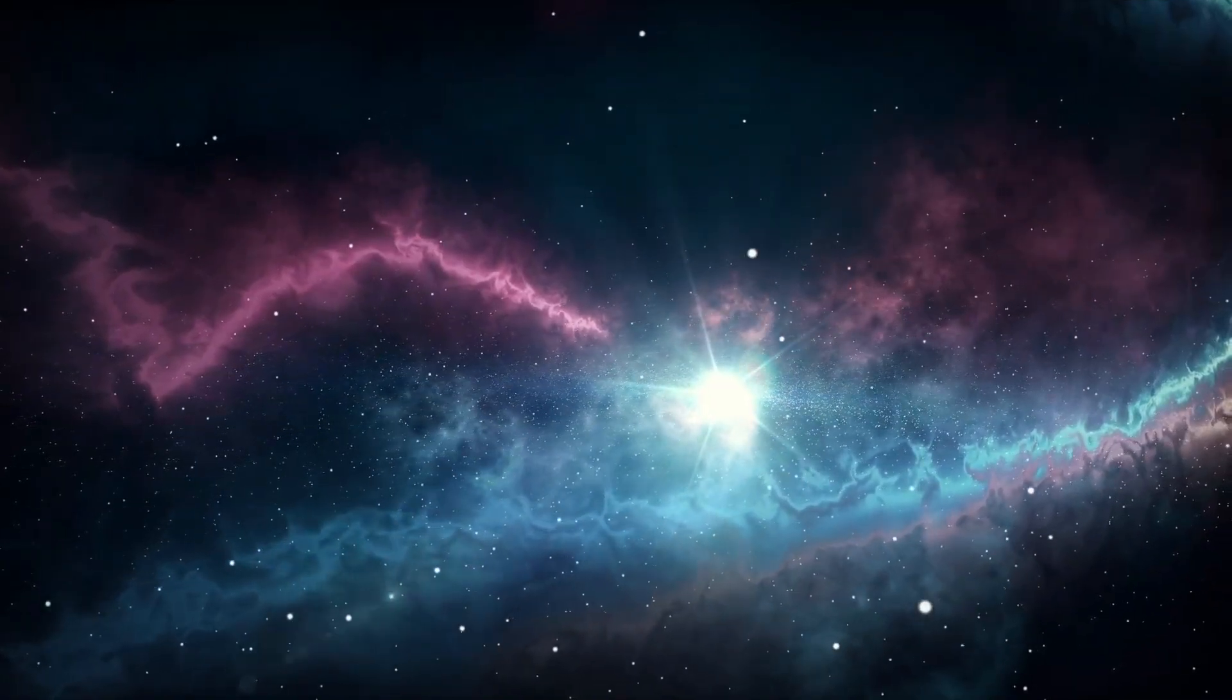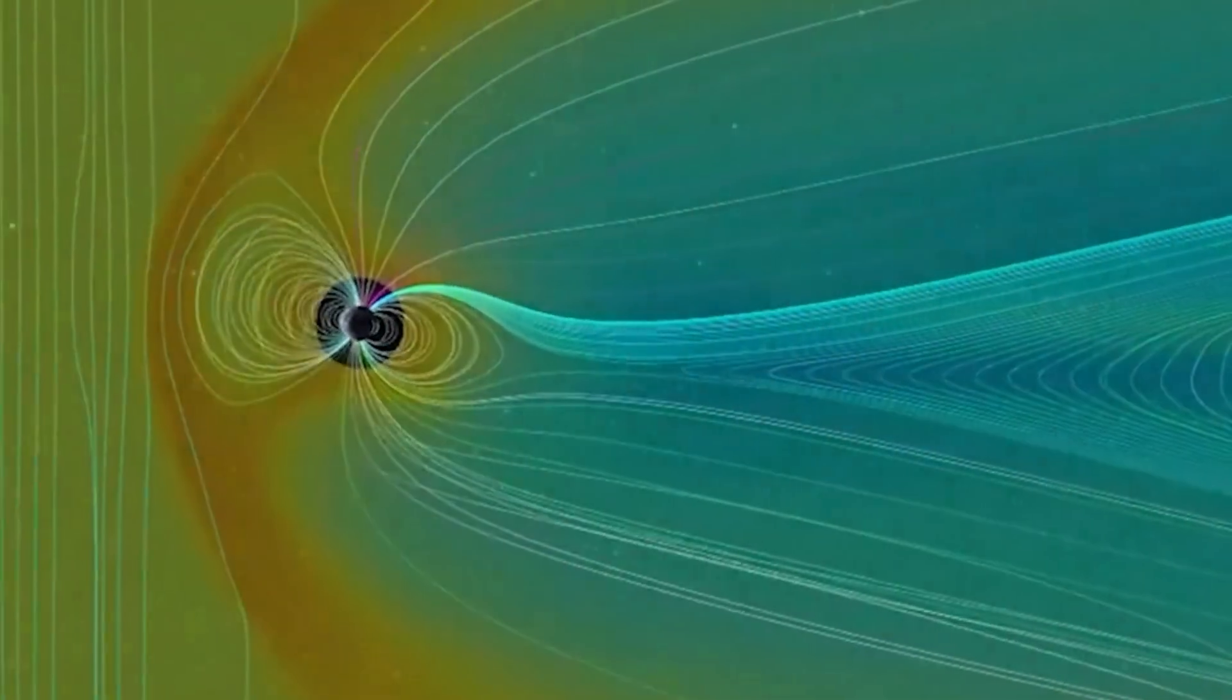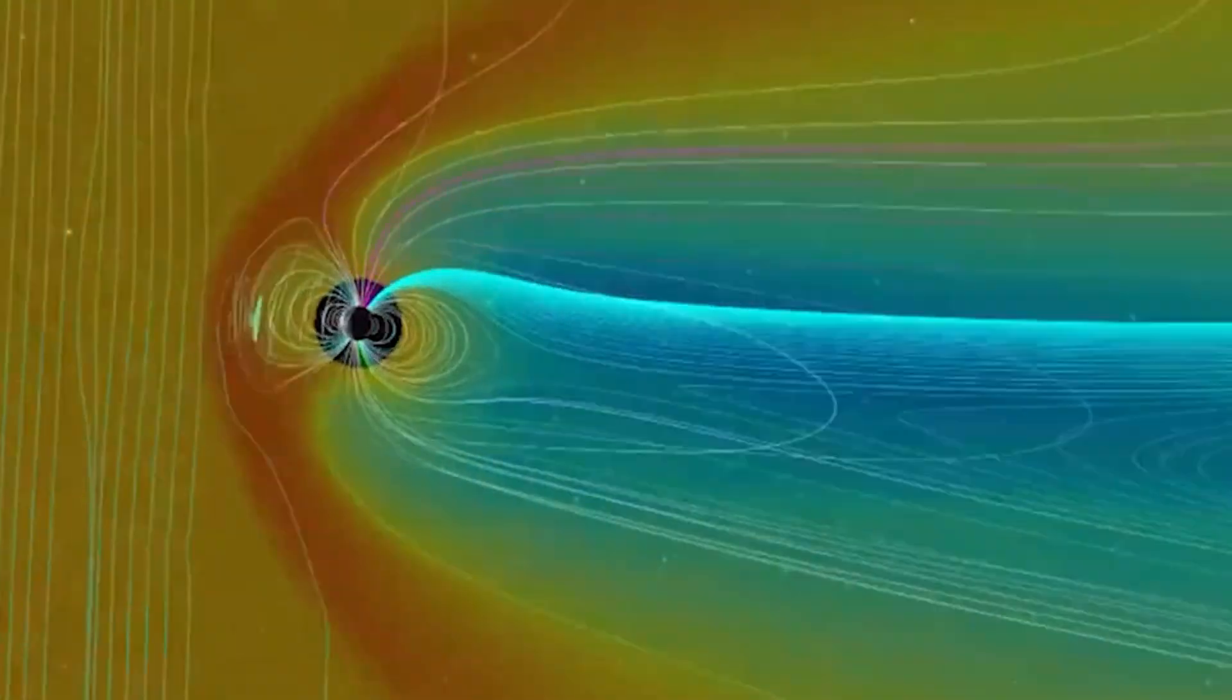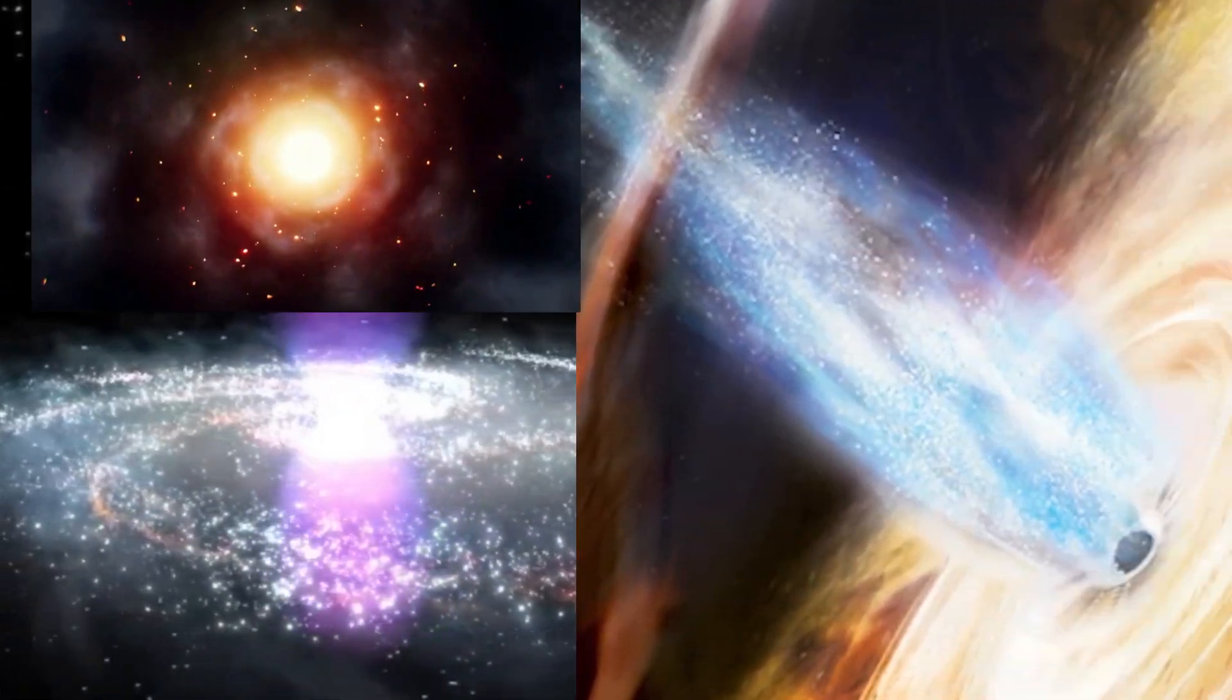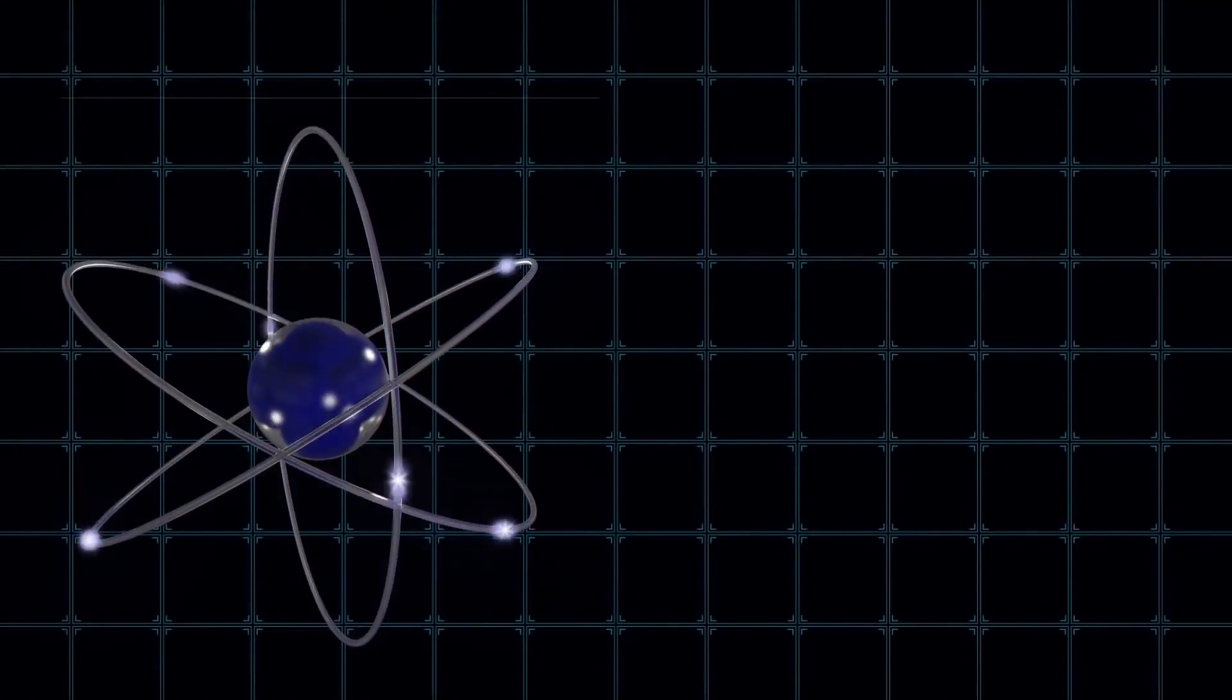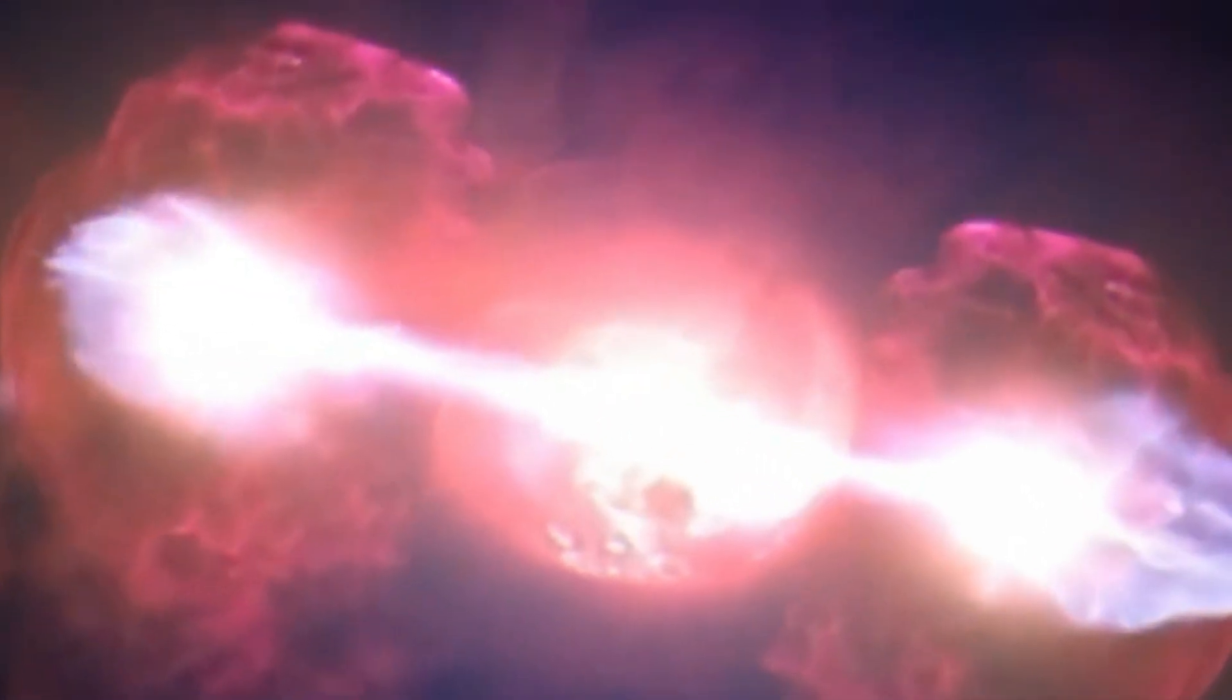Interestingly, cosmic rays have the potential to enhance the overall energy output of these bubbles. As cosmic rays are accelerated through magnetic fields, they can travel great distances before dissipating. In the case of the Milky Way's bubbles, this means that the high-energy particles originating from the black hole or starburst activity could continue to energize the surrounding gas, making the bubbles persist for millions of years. The process is similar to how a charged particle in an accelerator can generate radiation as it spirals through magnetic fields.